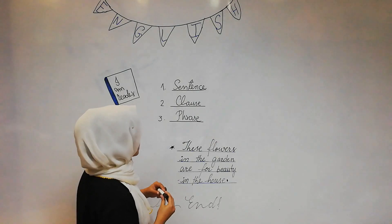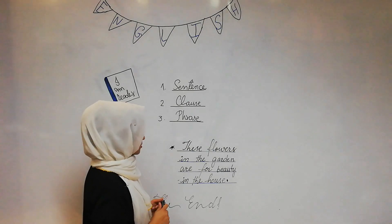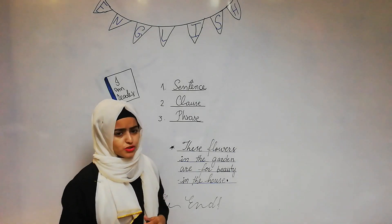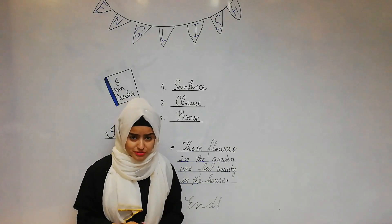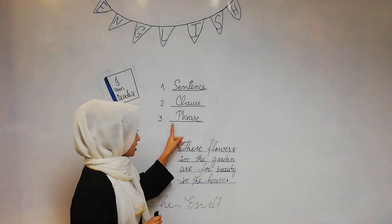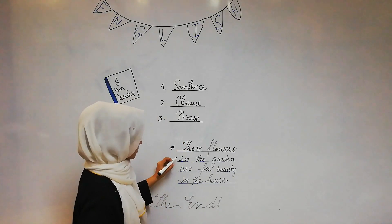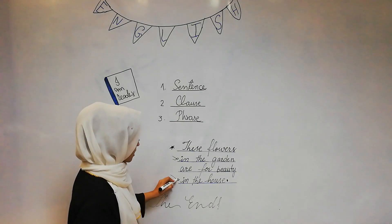Then, let's talk about the phrase. Phrase is actually a combination of two or three words, or more than two or three words. But, it's not a verb. In the phrase, it's not a verb. Just like, here is in the garden and in the house.